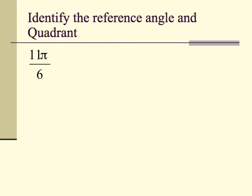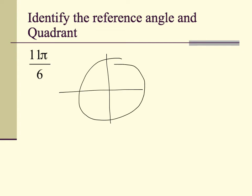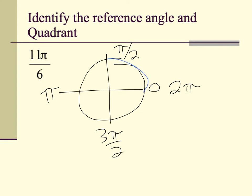One last time: find the reference angle and the quadrant for 11 pi over 6. We draw our circle and label it: 0, pi over 2, pi, 3 pi over 2, and 2 pi. We know our angle is bigger than 3 pi over 2 but less than 2 pi. How much less than 2 pi is 11 pi over 6? Subtracting gives us pi over 6 as our reference angle. We're in the fourth quadrant, and we can use that triangle to solve for all six trig functions.